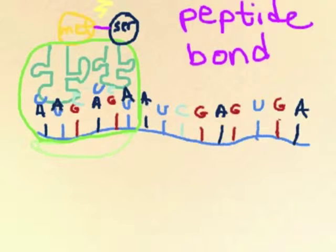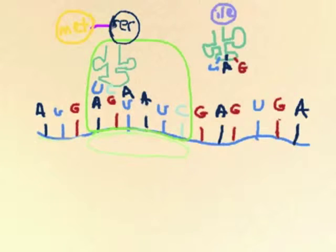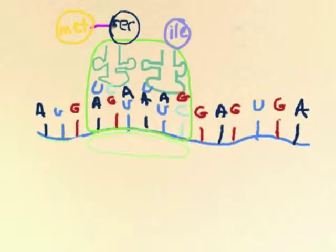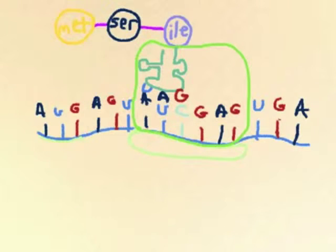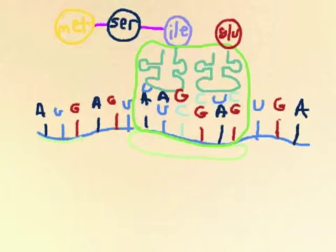Once they're together, the peptide bond is formed by the large ribosomal subunit, which then shifts over, and another tRNA comes in. Another peptide bond is formed, and it keeps shifting. New tRNAs come in, elongating the protein.